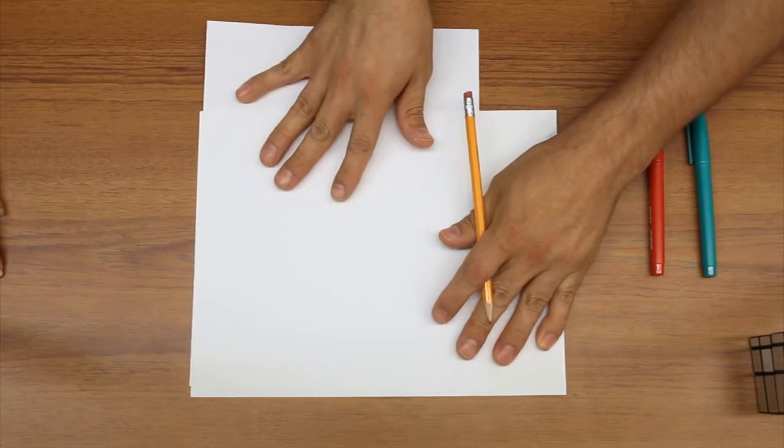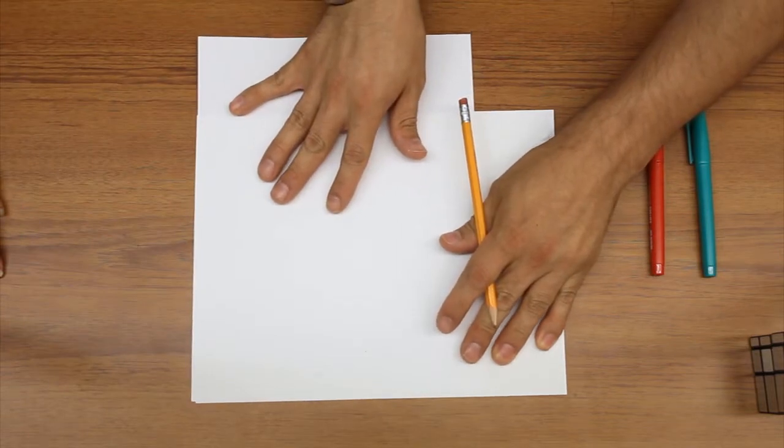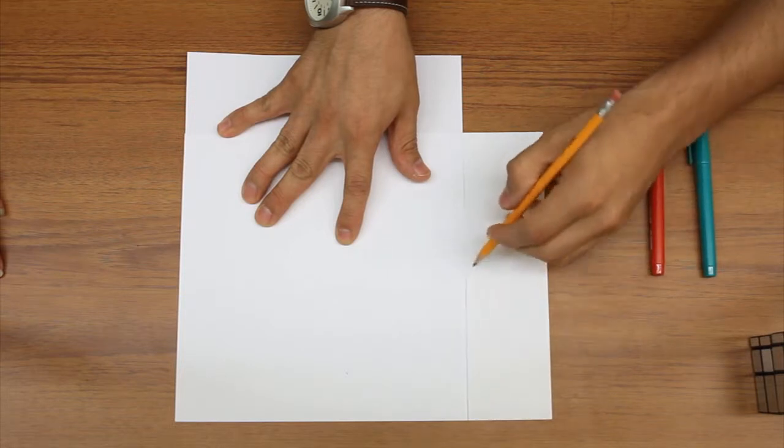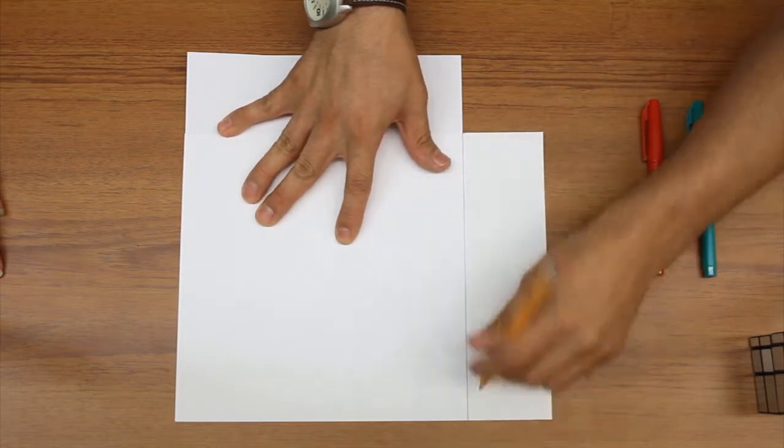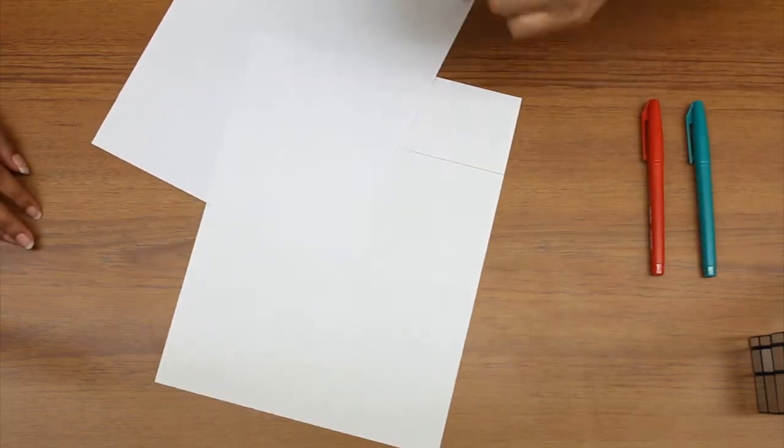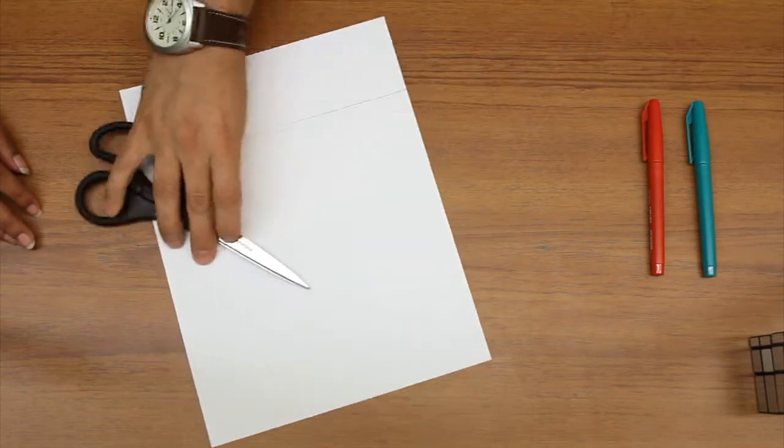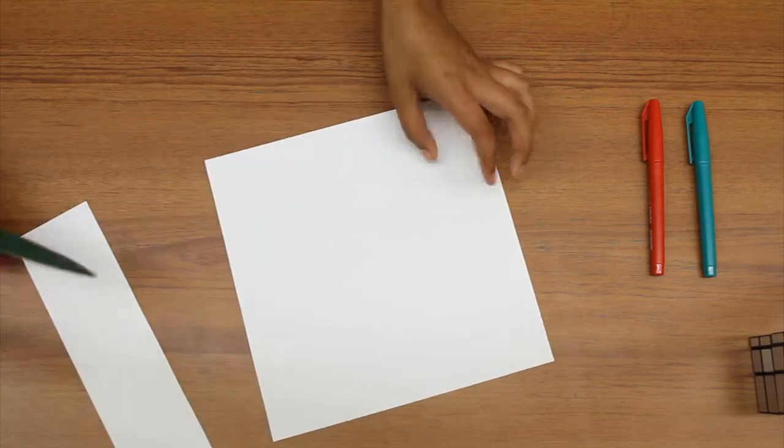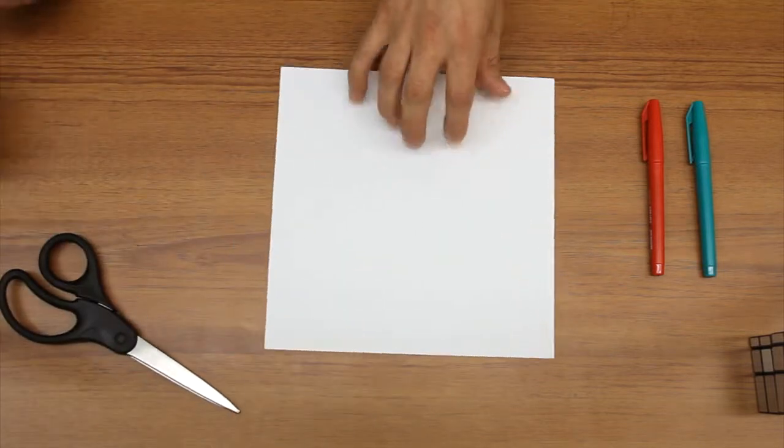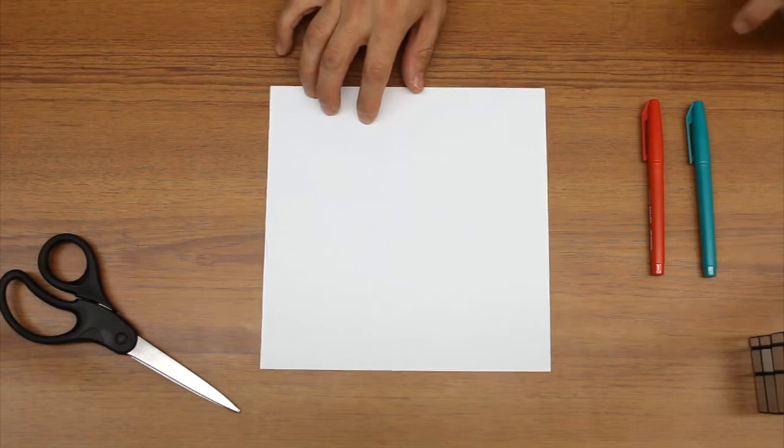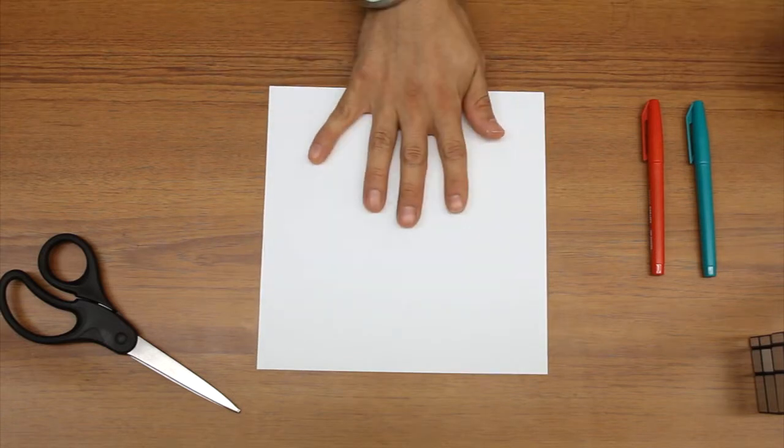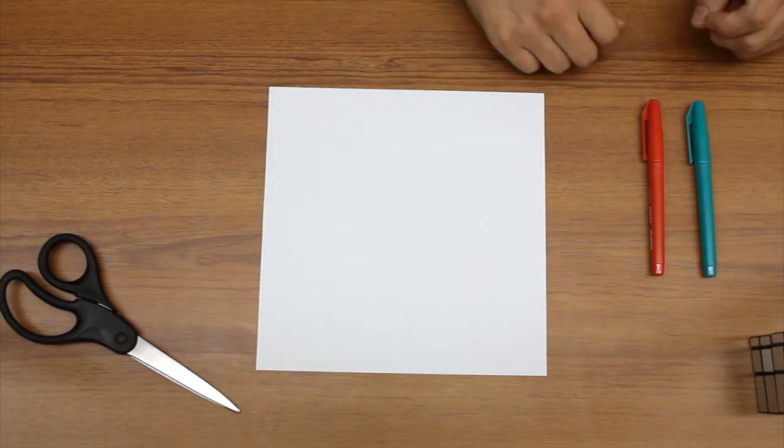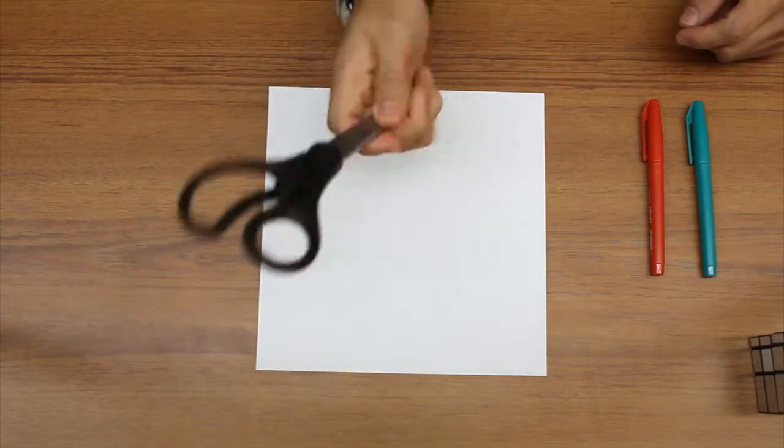All right, so let's get started. Taking this, we are marking with the pencil. And now we are cutting it. We don't need the pencil anymore. Very good, so now we have a perfectly square piece of paper. The actual size of the paper doesn't really matter because you can make this shape with almost any size.